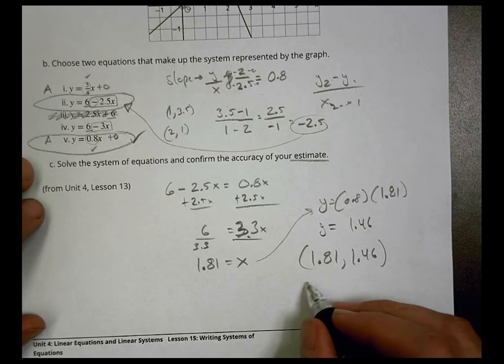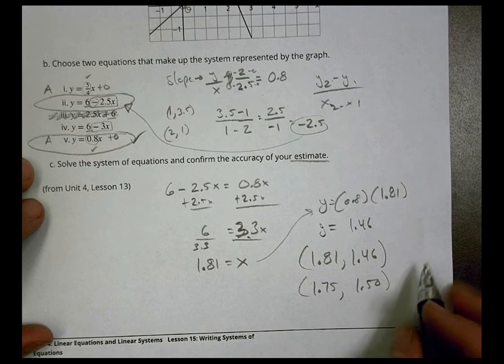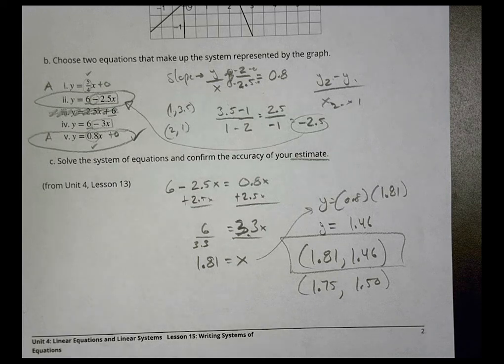And we compare that to our estimate which is 1.75 comma 1.50, and we were pretty close, weren't we? All right, that's it for today. We'll see you next time.